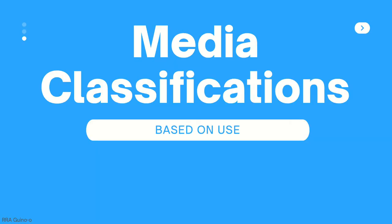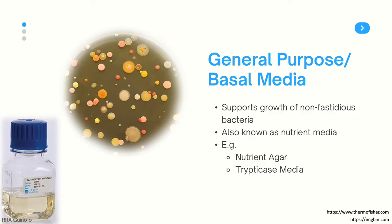We can also classify media based on their use. The first classification is general-purpose or basal media. This kind of media supports the growth of non-fastidious bacteria — bacteria that do not require complex or additional growth factors to grow. This type of media can also be known as nutrient media. Common types can occur in liquid and solid forms. For example, we have nutrient agar, the plate you see on the top left corner, where many types of bacteria are able to grow.